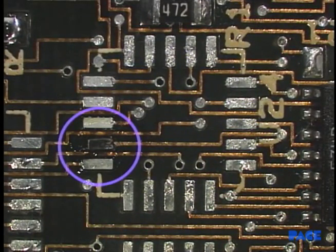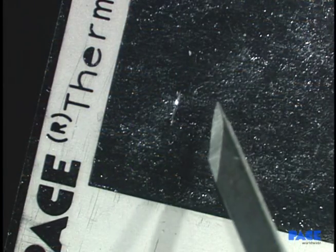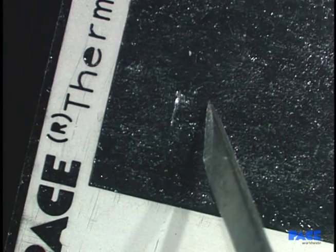For lifted lands, the dry film adhesive can be used to reattach the conductor using the Thermobonding process.